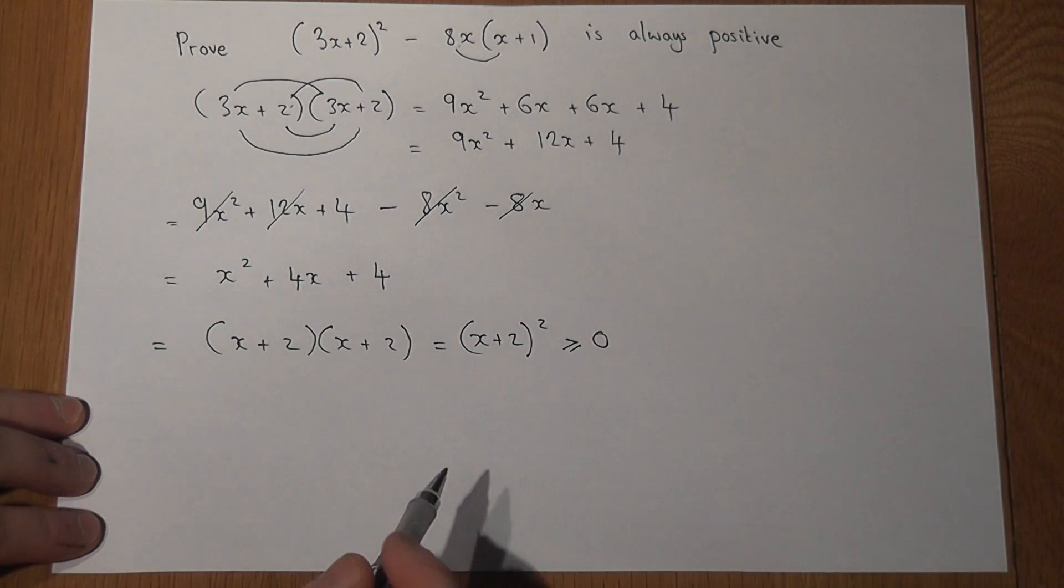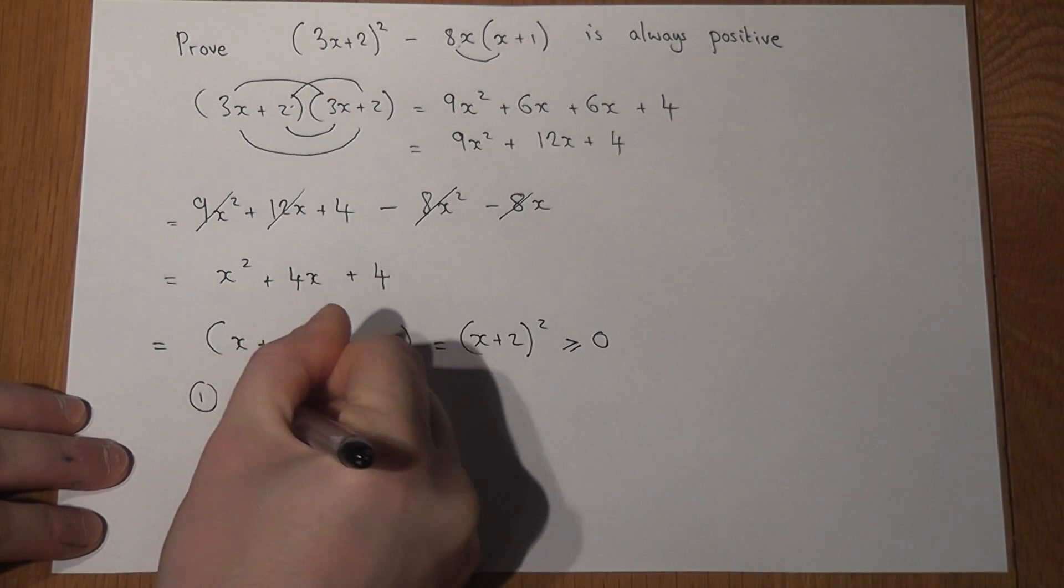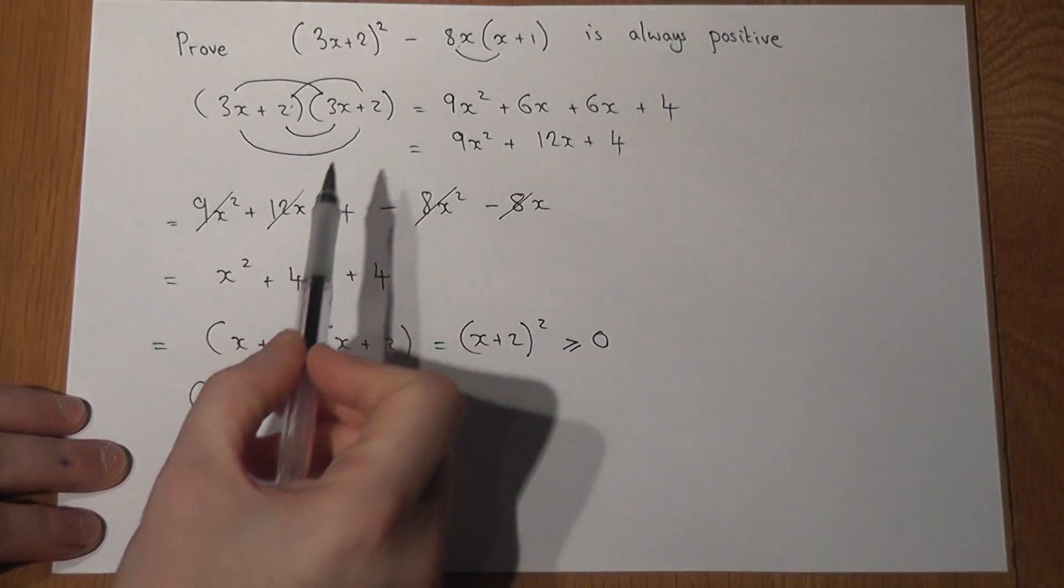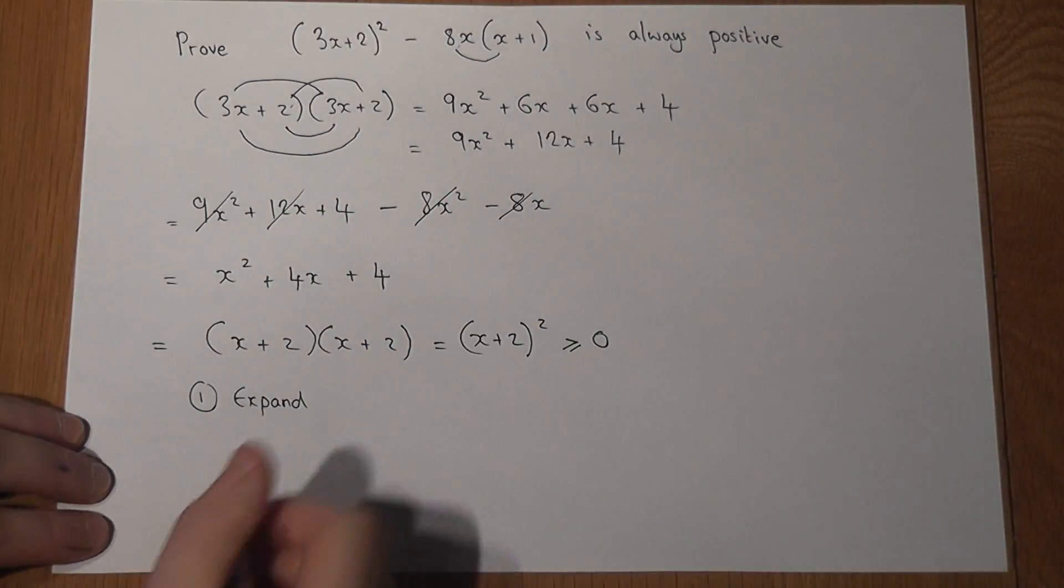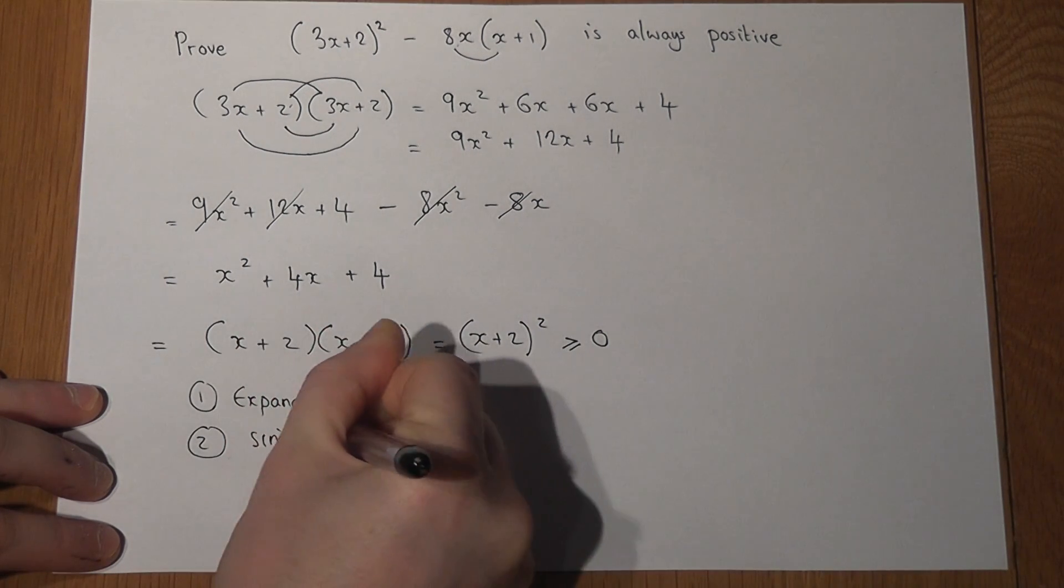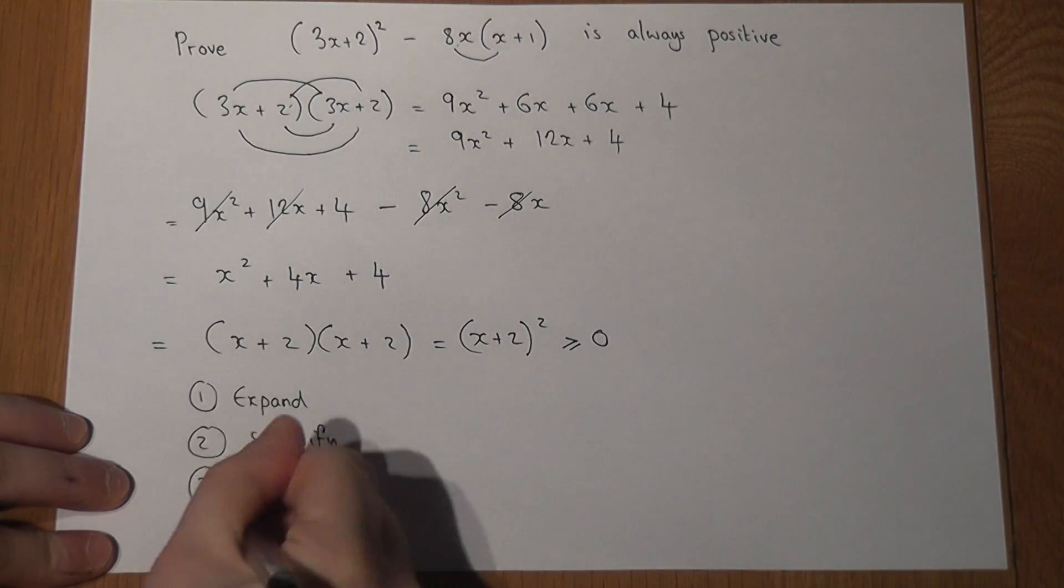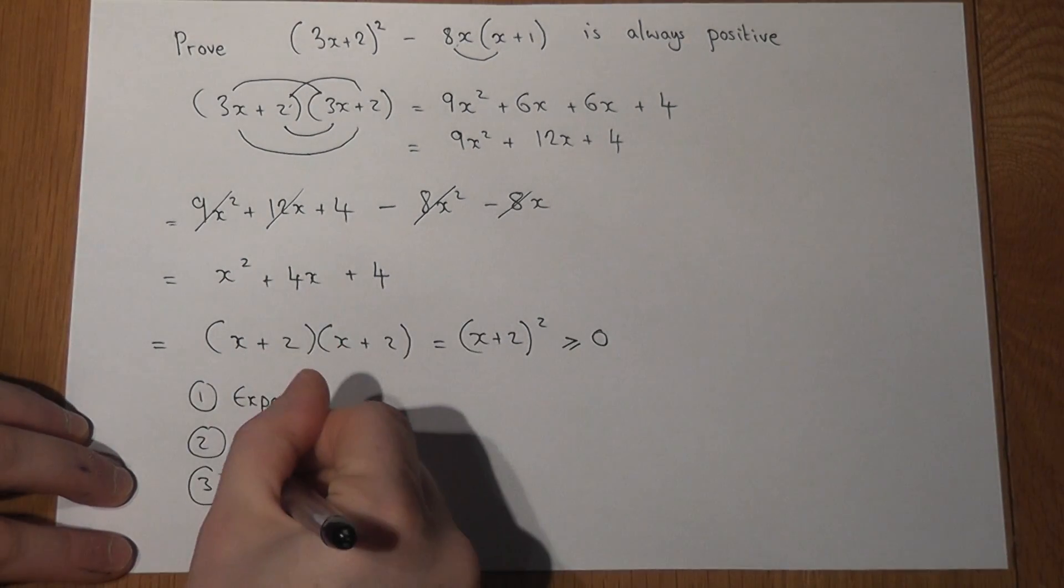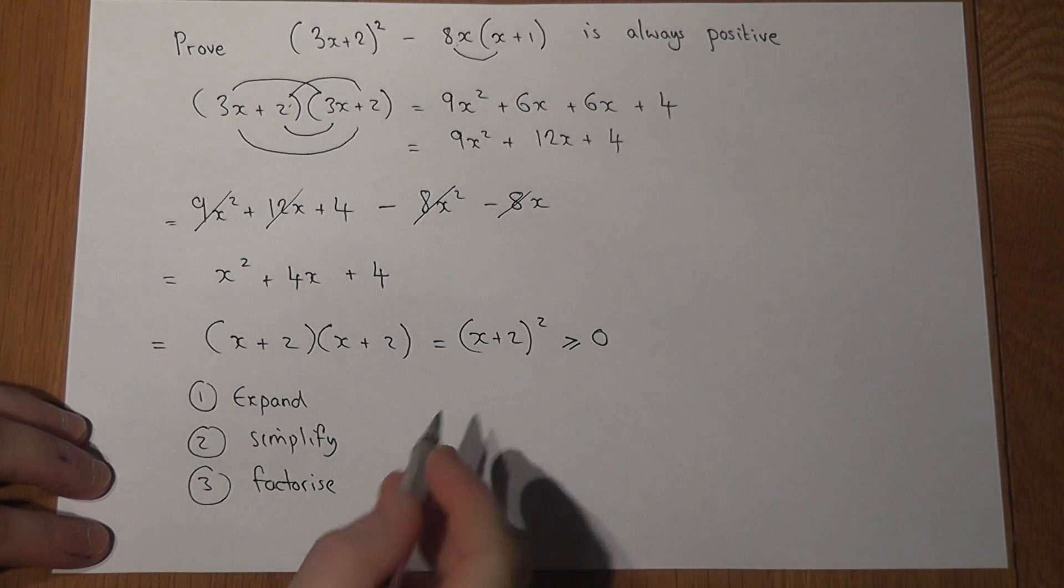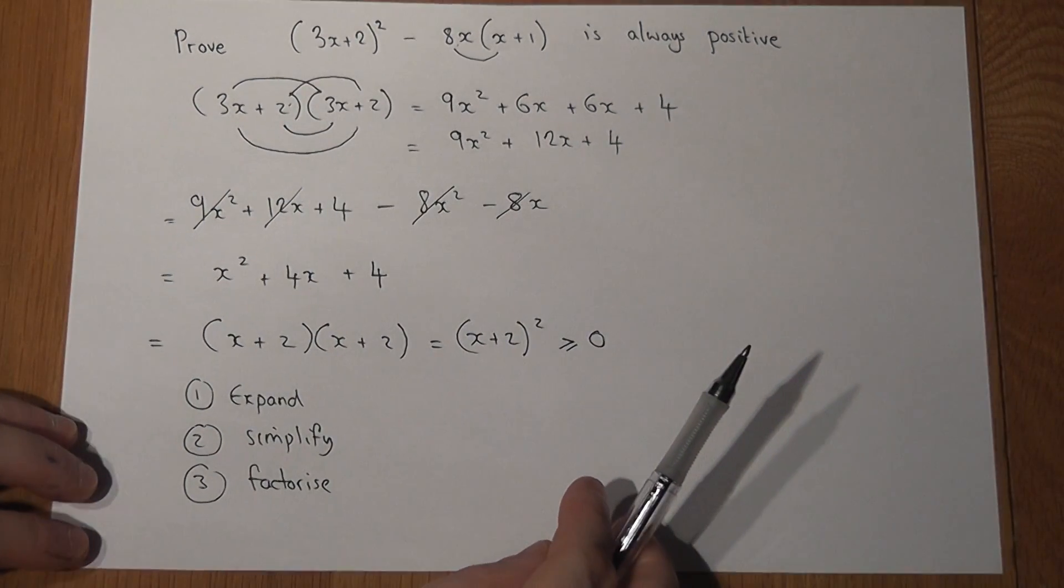So again steps. First of all try to expand. Carefully expand the first one and the second part of the expression. Secondly is try to simplify. Collect like terms. And thirdly where possible try to factorise your final answer. And hopefully that will show you how the original statement is correct.